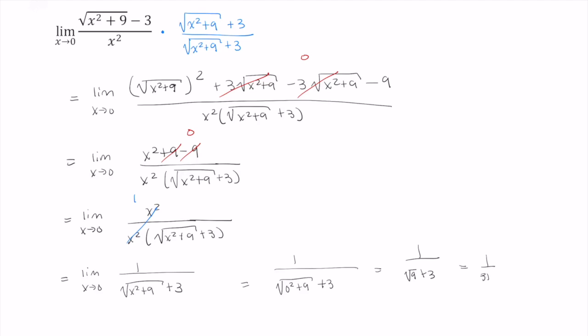Or 1 over 3 plus 3, 1 over 6. This tells me that the limit as x approaches 0 of the square root of x squared plus 9 minus 3 divided by x squared is equal to 1 over 6.